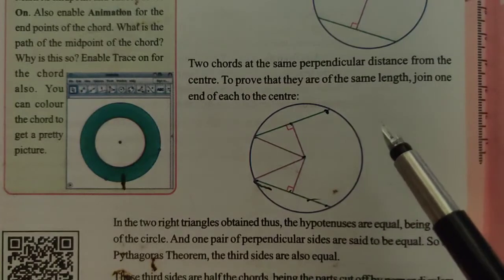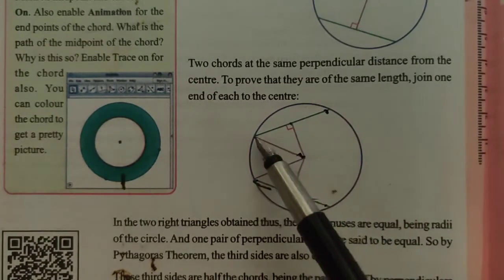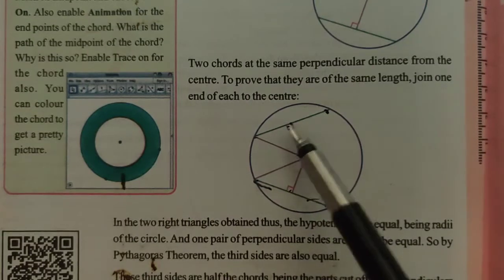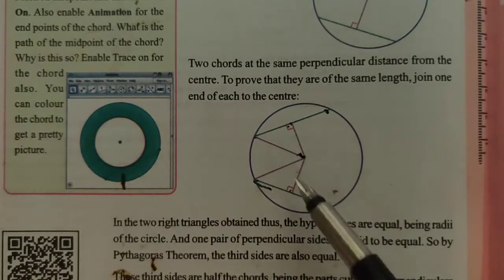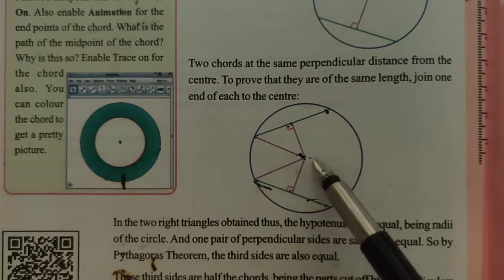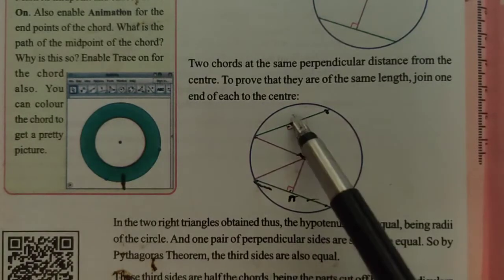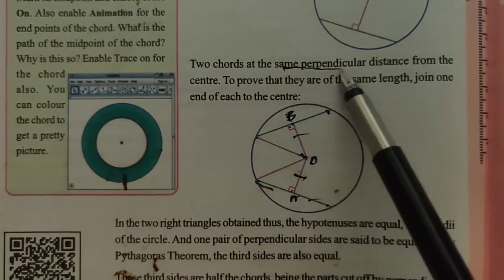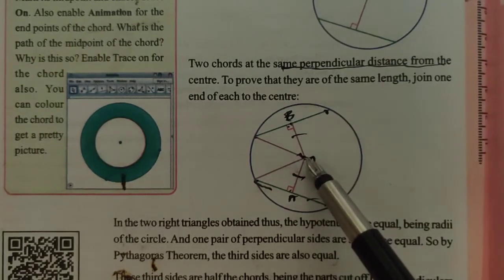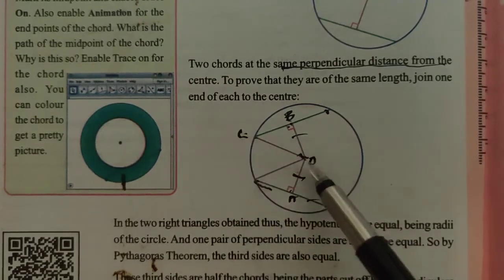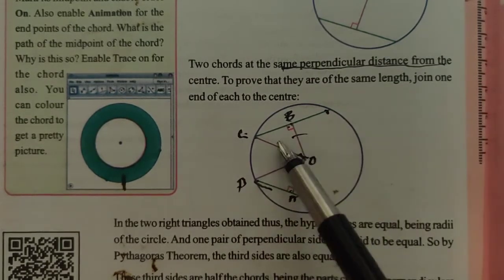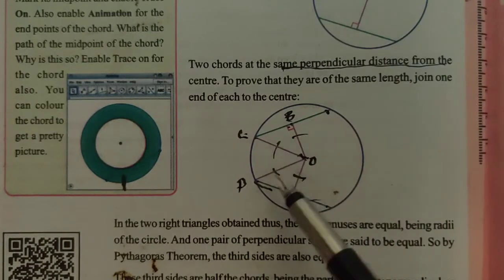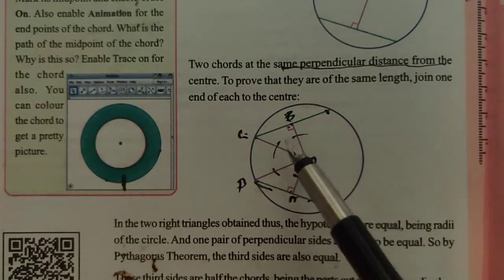How do we prove it? We consider two triangles here — both are right triangles because the perpendicular makes a right angle. It is given that OA equals OB because they are the same perpendicular distance from the center. Also, OC and OD are equal — they represent the radius of the circle, therefore these radii are equal. Both are radii, so now we compare these two triangles.